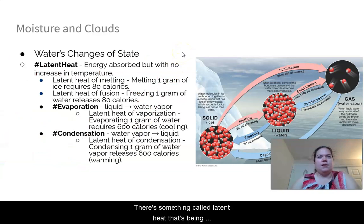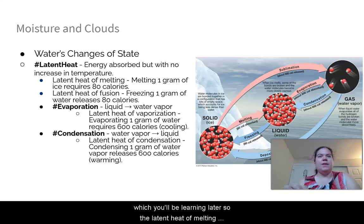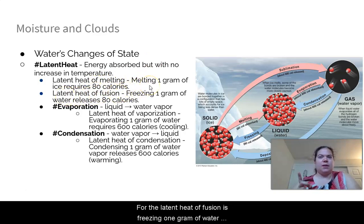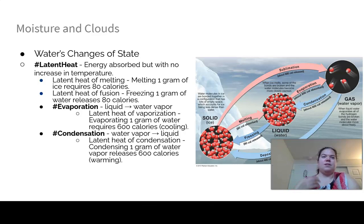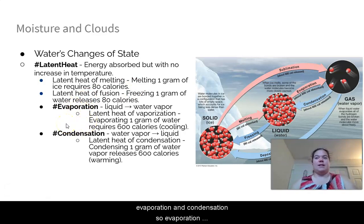When changing states, there's something called latent heat that is released or absorbed — this energy is absorbed with no increase in temperature. This is very important when it comes to building hurricanes. The latent heat of melting requires 80 calories per gram from the environment to melt ice. Conversely, the latent heat of fusion — freezing one gram of water — releases 80 calories, lowering its energy state so it becomes ice.